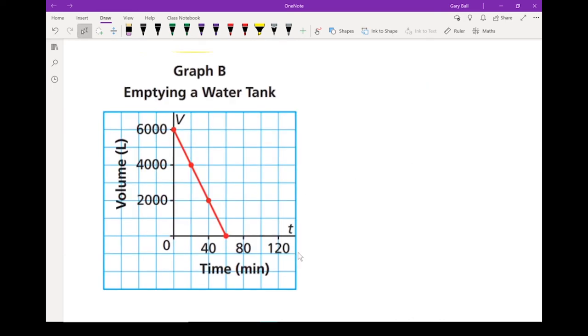I'm going to do the same thing on graph B when we're emptying that water tank. I'm going to pick two points and you can pick any two points. I'm going to pick this one and that one. Same thing, I'm going to draw that triangle. I've got a rise and a run. So in this case, here is my rise and there is my run. M equals rise over run.